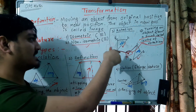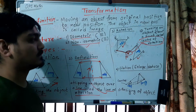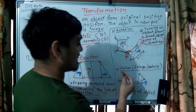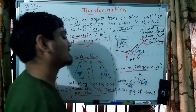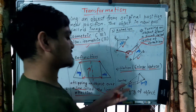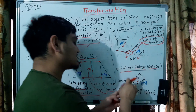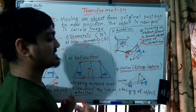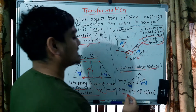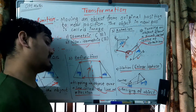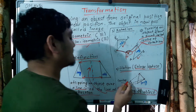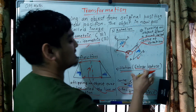The fourth kind of transformation is dilation. In the book, the focus is on enlargement. Dilation includes enlargement and reduction. There is an original object and a scaling factor. Basically, it is the resizing of the object. The image is centered on the basis of certain scale factors.